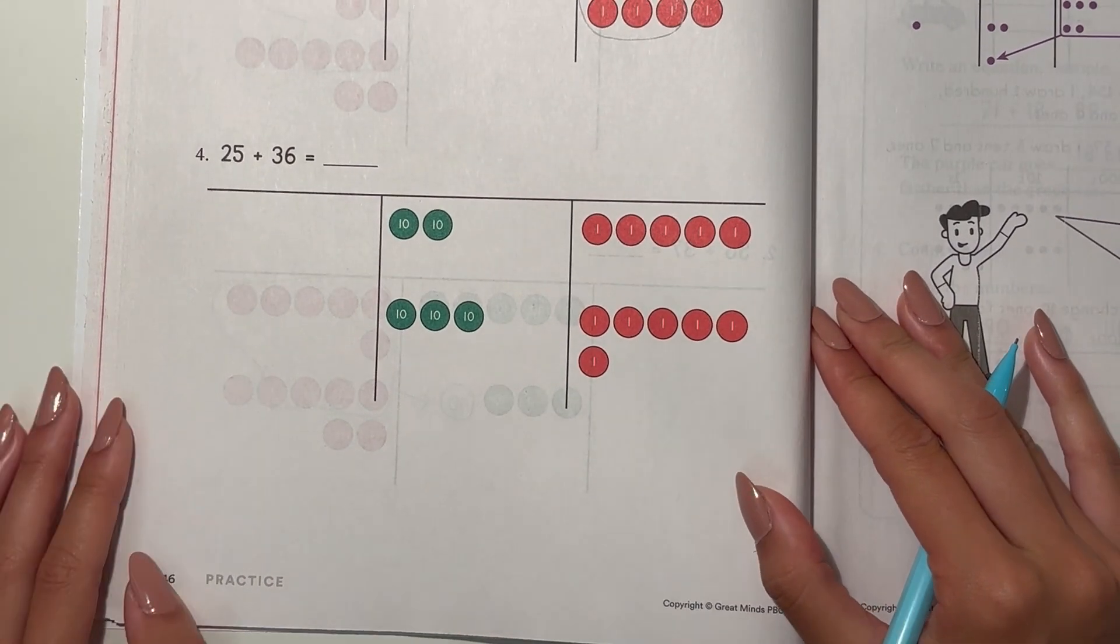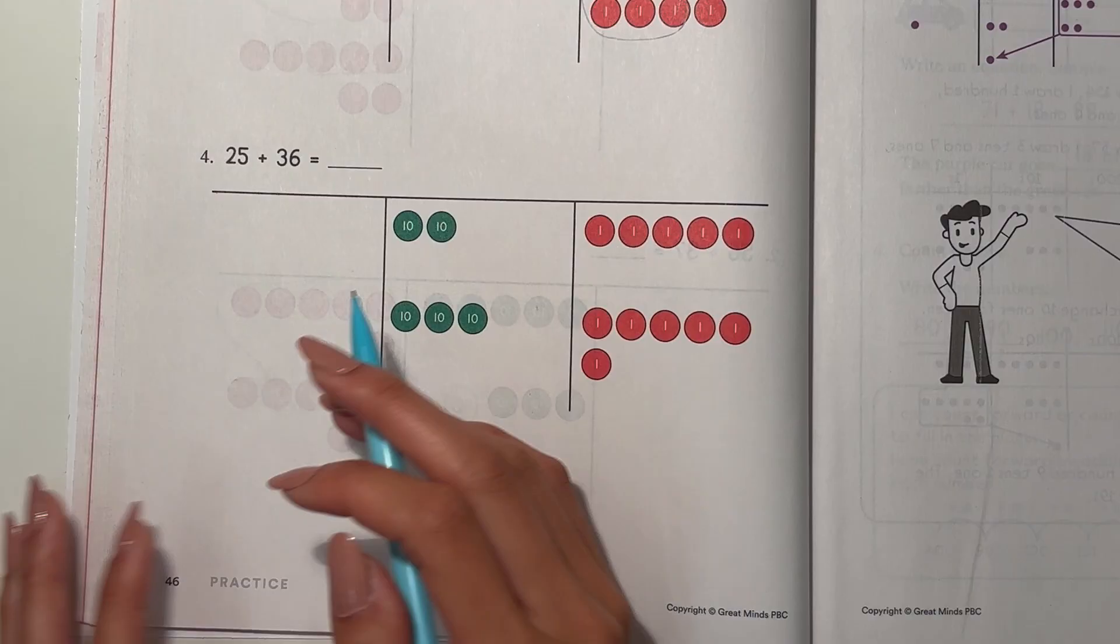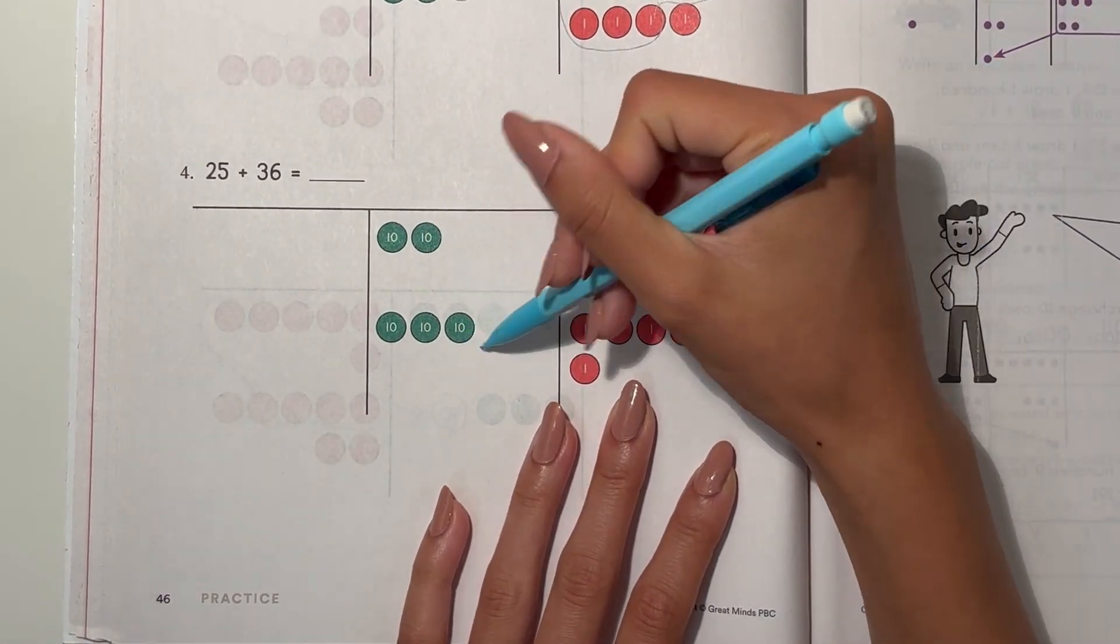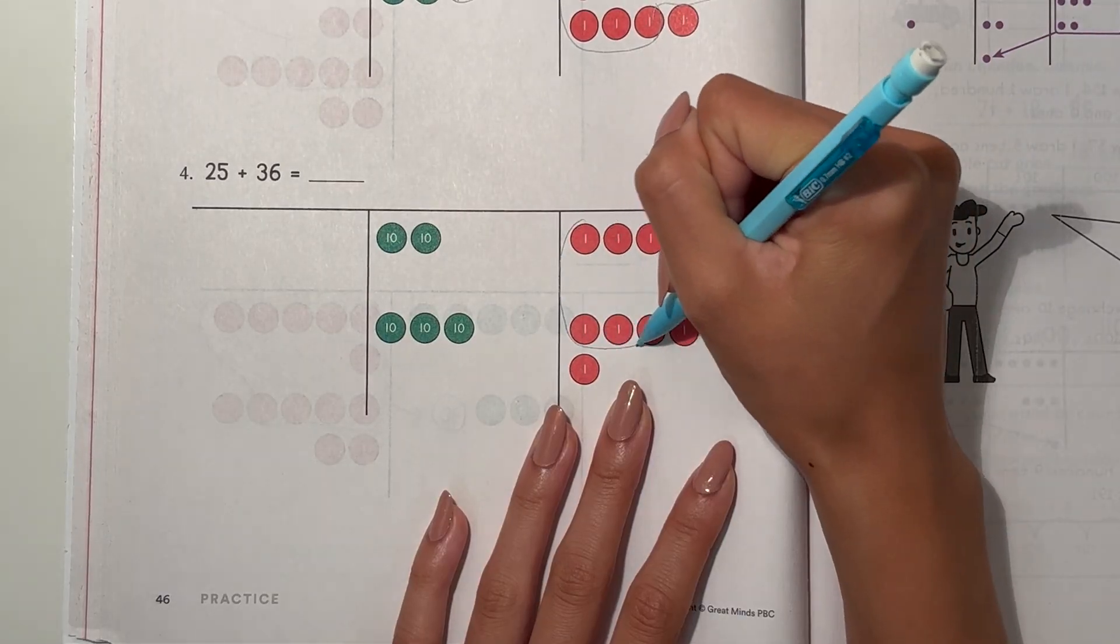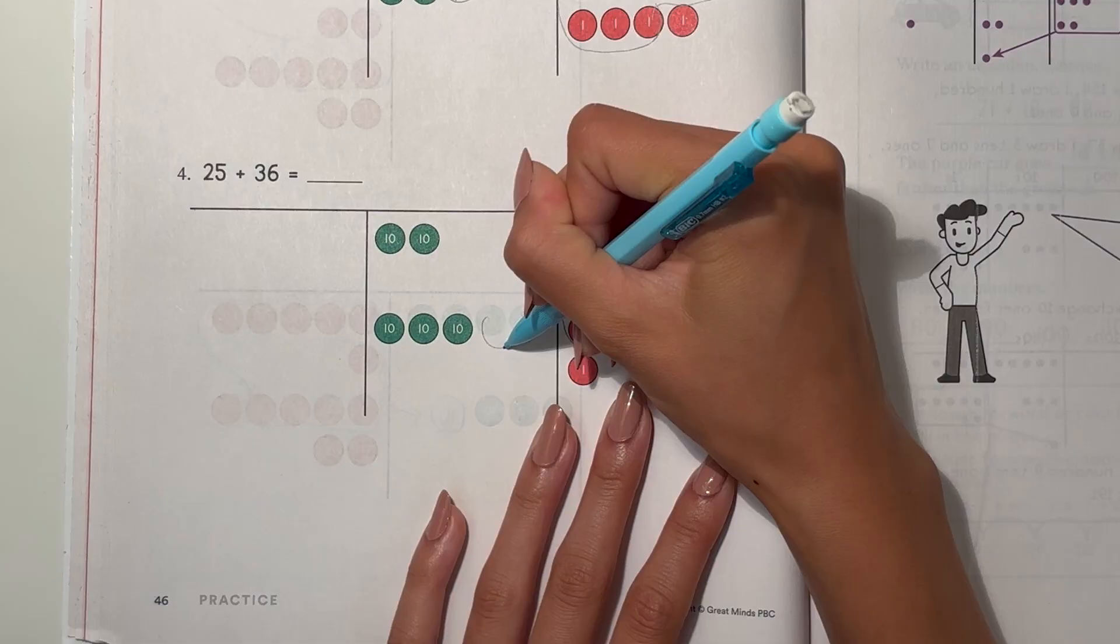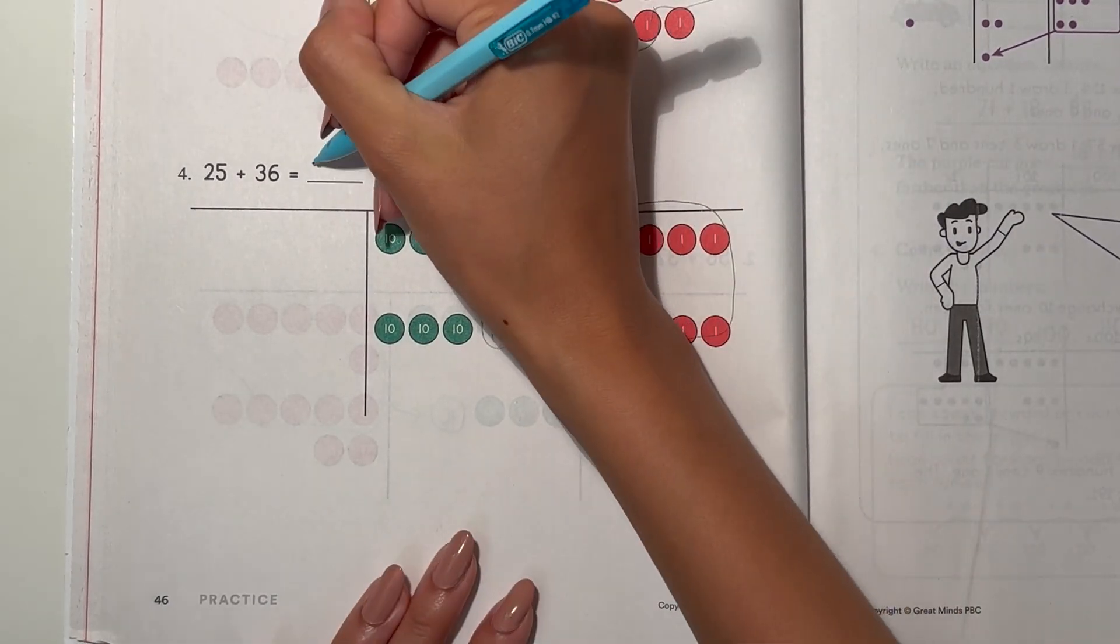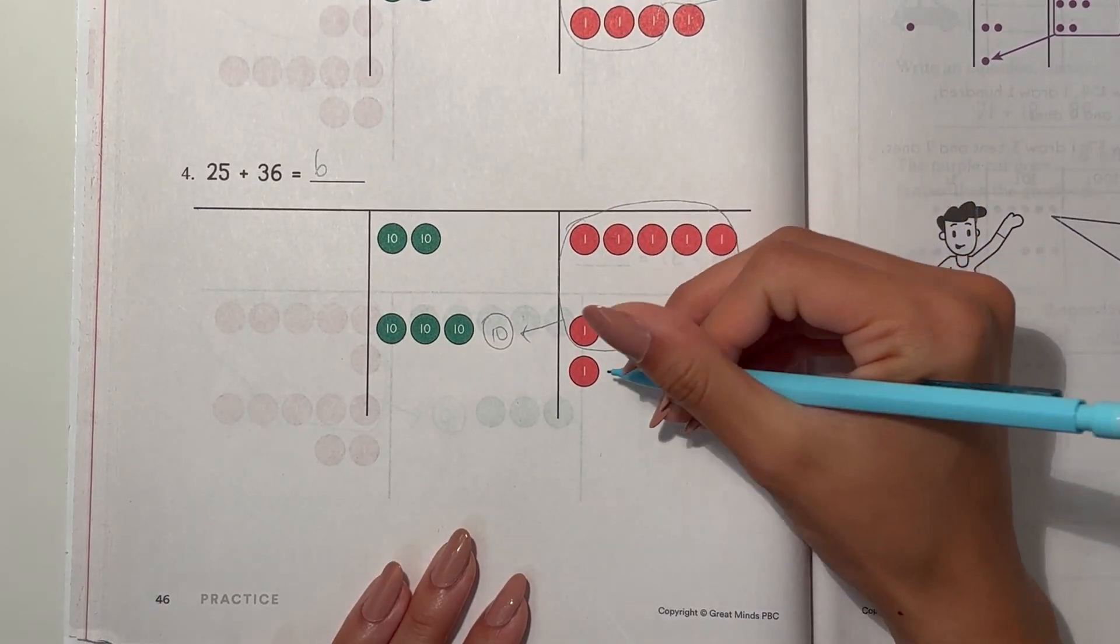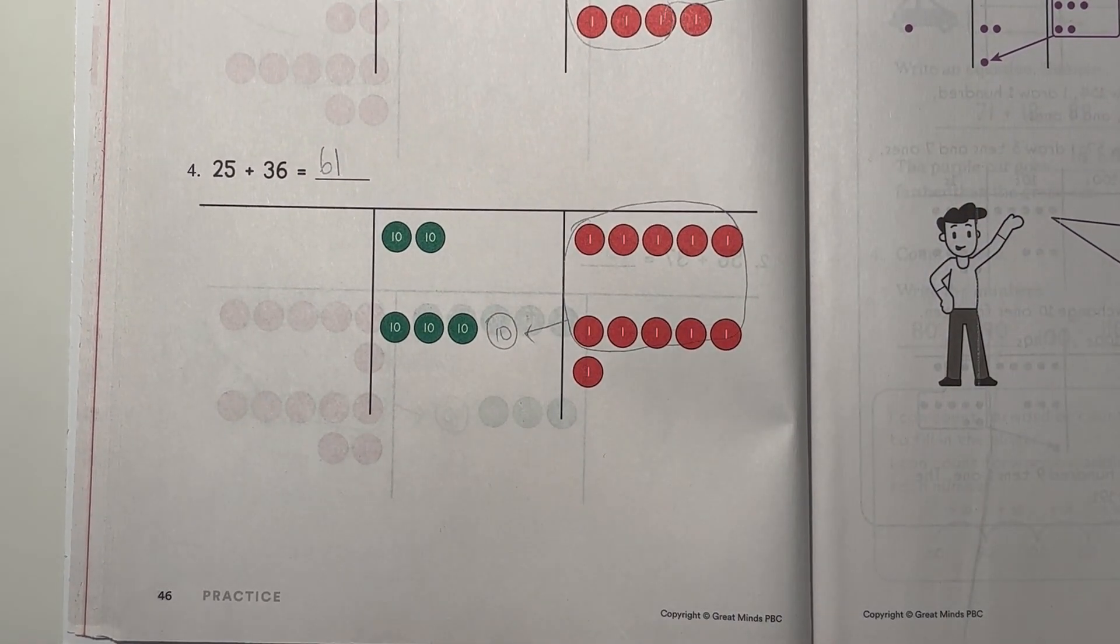Alright, and now number 4, 25 plus 36. So this is 5, another 5. This makes 10. So that's 1 ten. So now I have 6 tens and 1 one, 61.